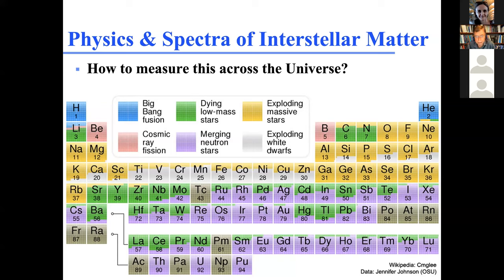Perhaps the most fundamental thing we get out of this is where we came from — the elements we're made of. This is a fantastic image that Jennifer Johnson at Ohio State did, showing the origin of the chemical elements, the things that make us, the various sites that have made the atoms inside our bodies. In some ways, it's the most basic question: where did the atoms that build up planets come from, and how did the complex chemistry in the ISM lead to life?